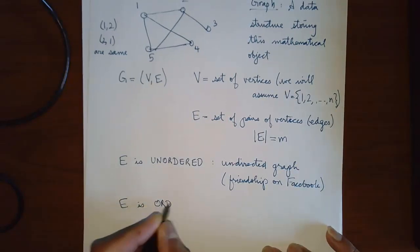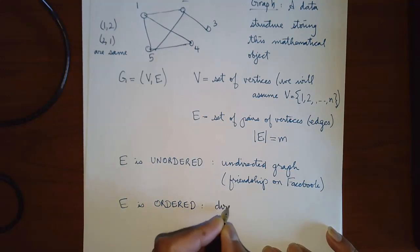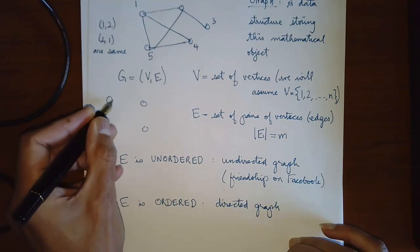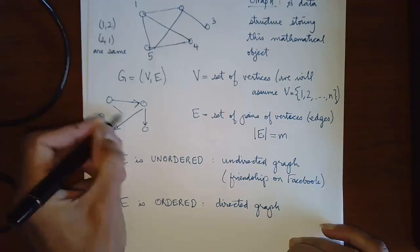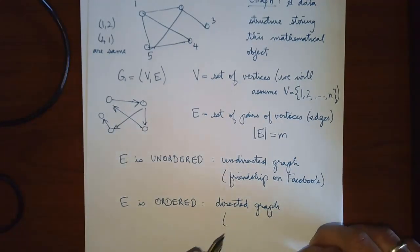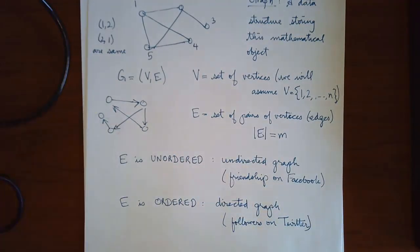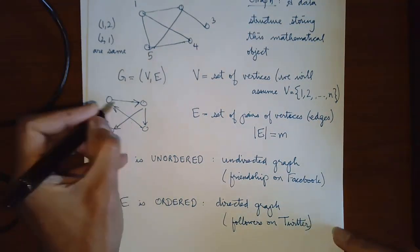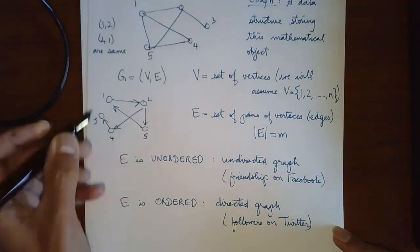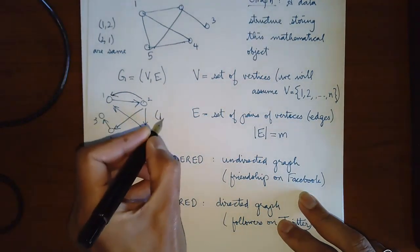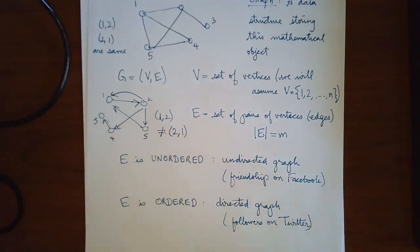If E is ordered, then this is called a directed graph. An example of a directed graph — think of it as edges having a direction; they only go one way. You can think of this as like followers on Twitter. You follow a celebrity doesn't mean that the celebrity follows you. So the pair (1,2) is not the same as the pair (2,1) in a directed graph.